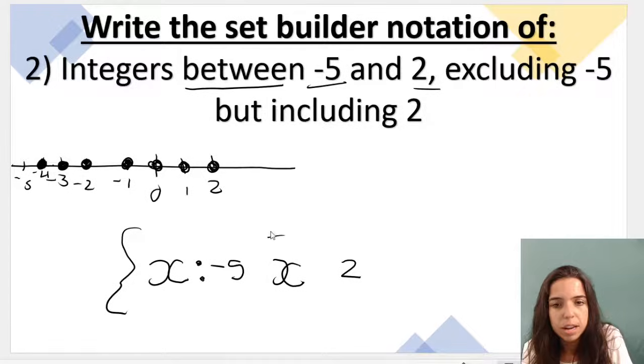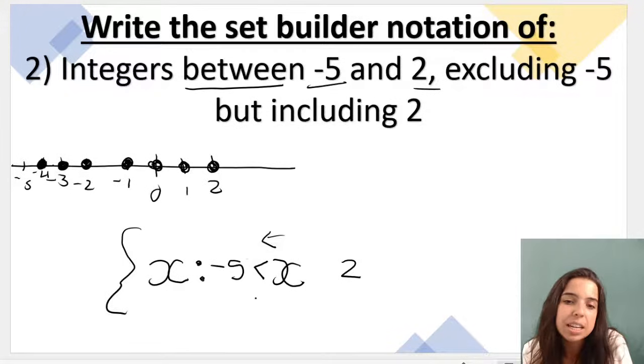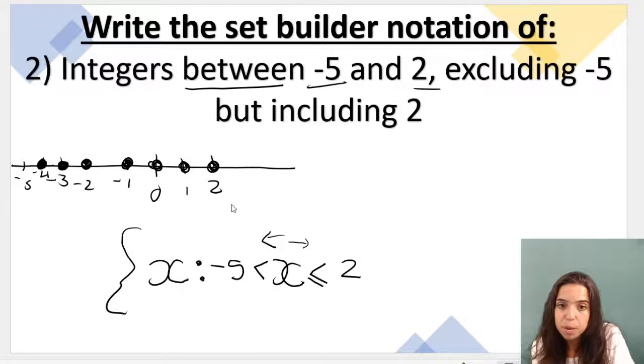Let's read it this way. We need to read it from right to left now. x is greater than negative 5. But you see that I don't put an equal sign here. The reason why is because it excludes negative 5. Then I read this way when it comes to the 2. x is smaller than but equal to 2, because remember it includes 2.